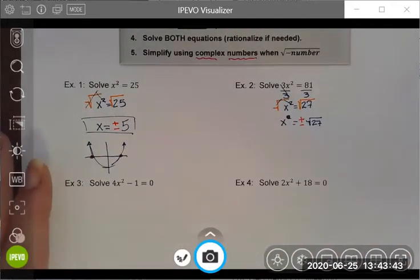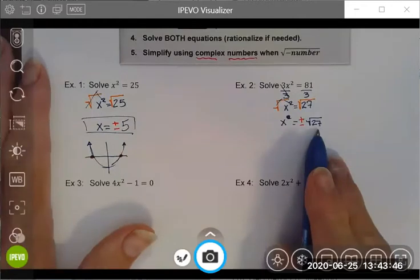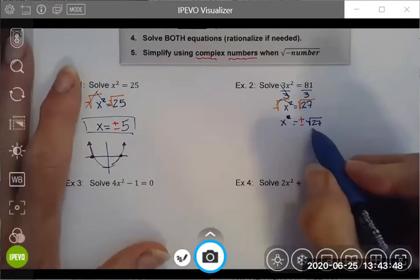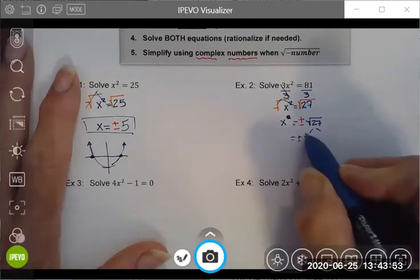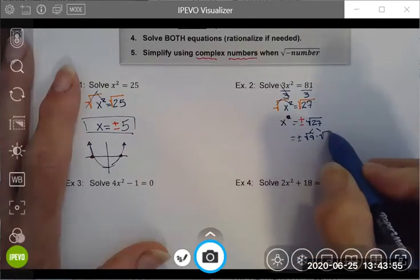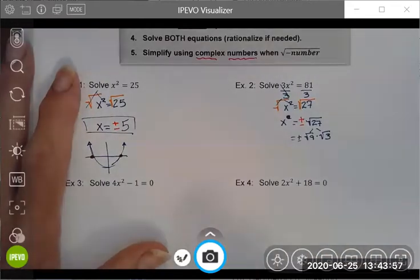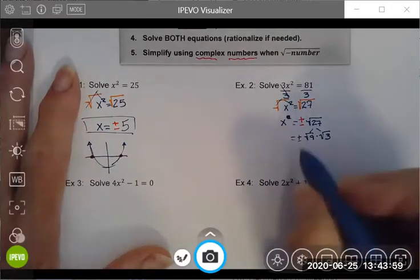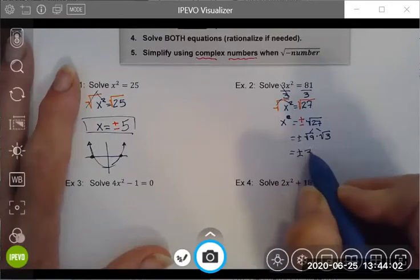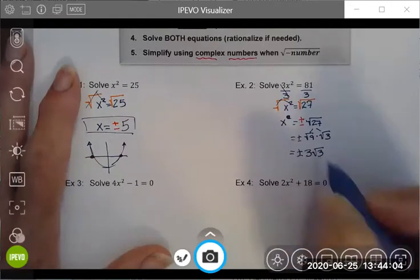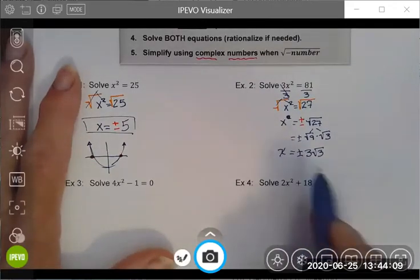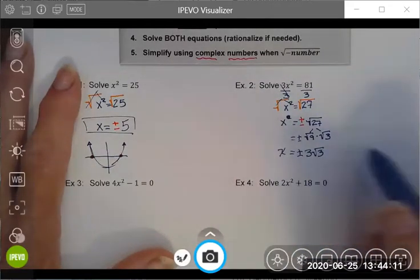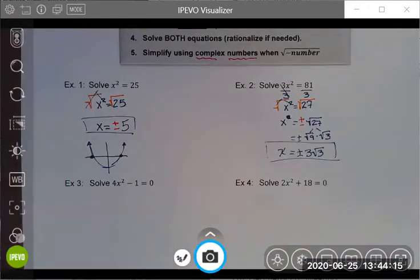I have to be careful here because in this particular case, the square root of 27 is not simplified. There is a perfect square nine inside of this. So it's really plus or minus the square root of nine times the square root of three. I can simplify this one more step because the square root of nine is three. Don't forget your plus or minus because there are two solutions.